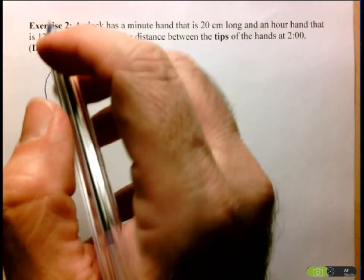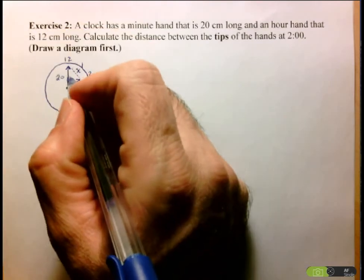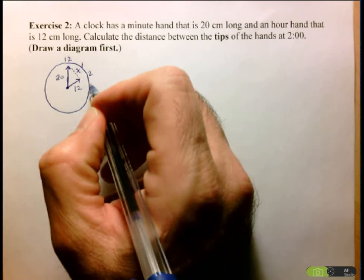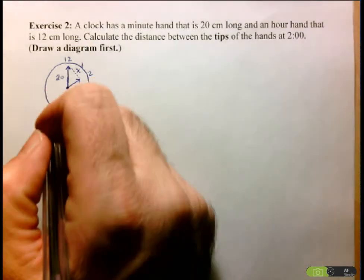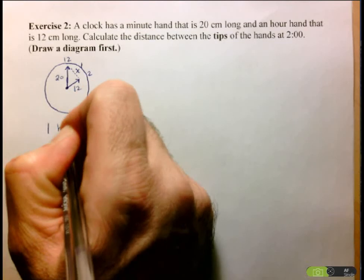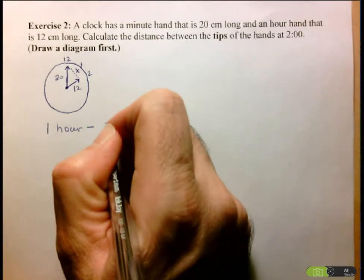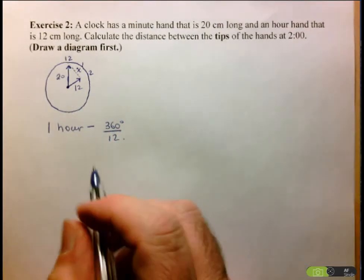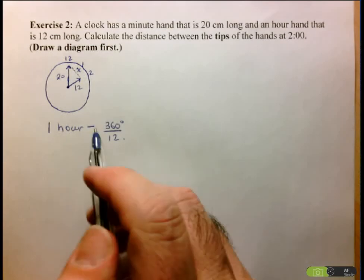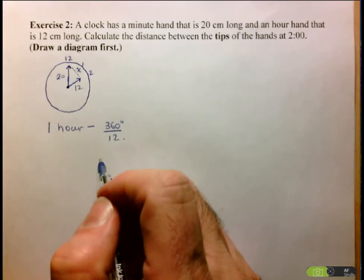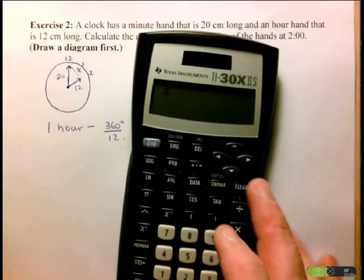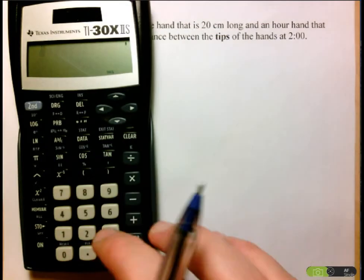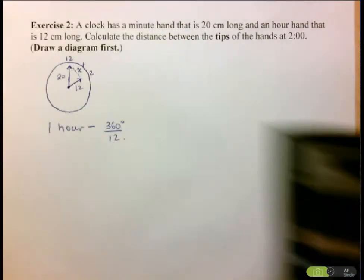So what we're going to do is we're going to calculate the number of degrees it moves in one hour. Since each of these numbers is equally spaced around the circle, one hour is going to be 360 degrees divided by 12. So one hour corresponds to 360 divided by 12. So we calculate that. Let's get some better light on here. 360 divided by 12. And here we've got 30.